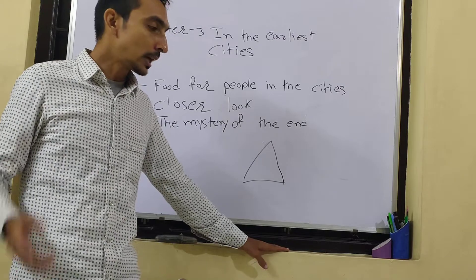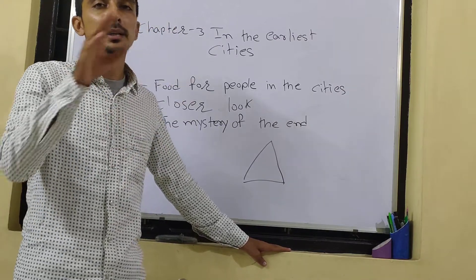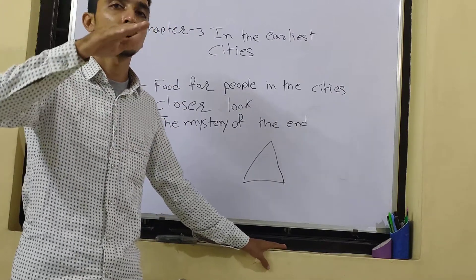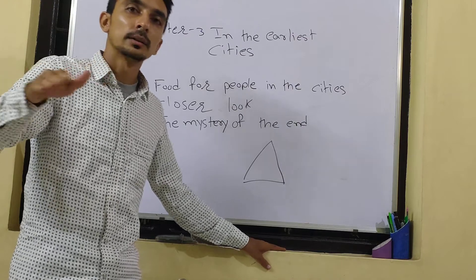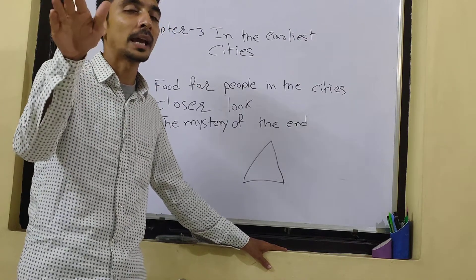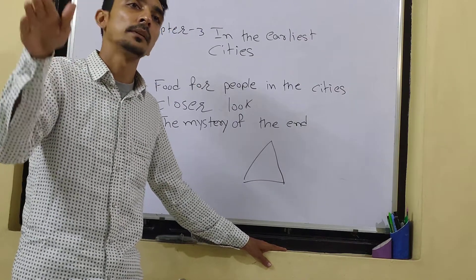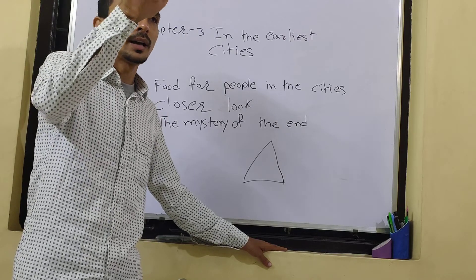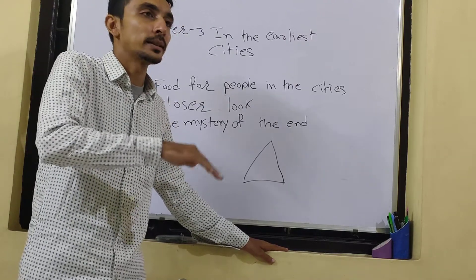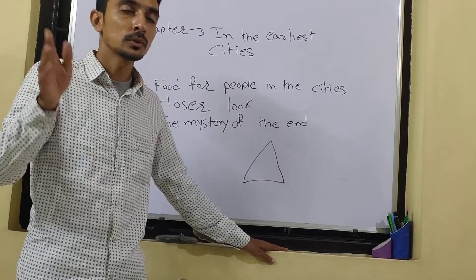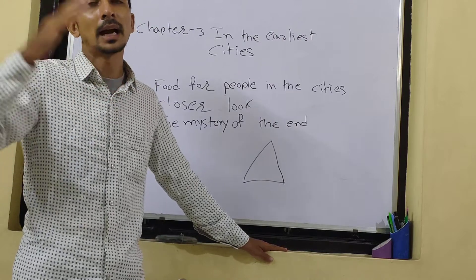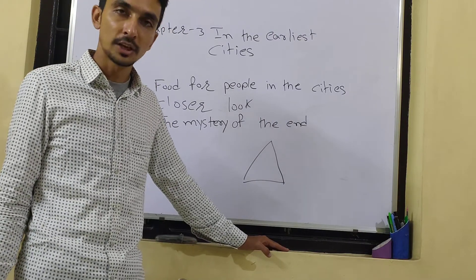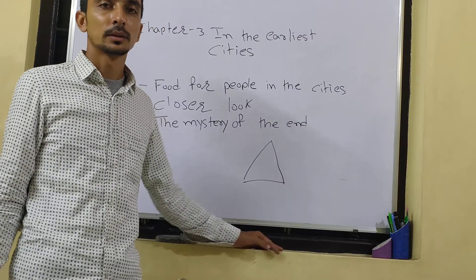So that was all about the earlier cities — how cities were constructed, then business, farming, agriculture, raw materials, and then the end of the city and civilization. There are so many possibilities behind the end. This is all about this chapter. Thank you.